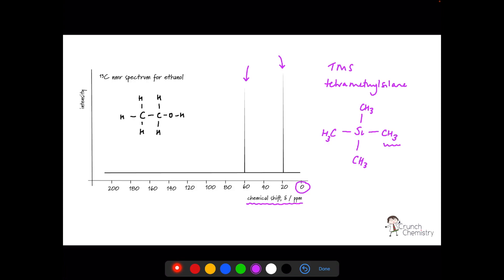And the symmetrical arrangement of these methyl groups means that we've got 12 hydrogen nuclei, all strongly shielded, giving a unique signal which is assigned a chemical shift of zero on our scale. Similarly, the four carbon atoms are equivalent. They're all in the same chemical environment. So they give one strong signal, also assigned a chemical shift of zero.